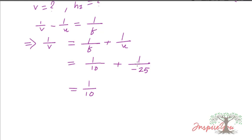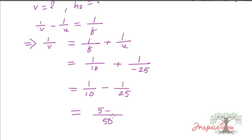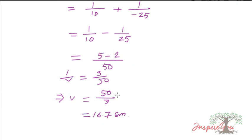So 1/v equals 1/10 plus 1/(minus 25), which equals 1/10 minus 1/25. The LCM of 10 and 25 is 50. So this gives 5/50 minus 2/50, which equals 3/50. Therefore 1/v equals 3/50, so v equals 50/3, which equals 16.7 centimeters.